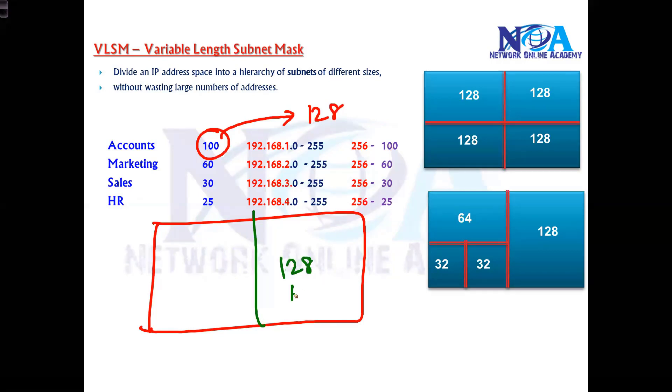For the 60 requirement, I won't go with 128 - instead I'll go with 64 (2 power 6 is 64, 2 power 7 is 128). Whatever 128 is left, I'll divide into two parts and allocate 64 and 64. One 64 is given for marketing, one 128 is given for accounts, and I have 64 addresses available.